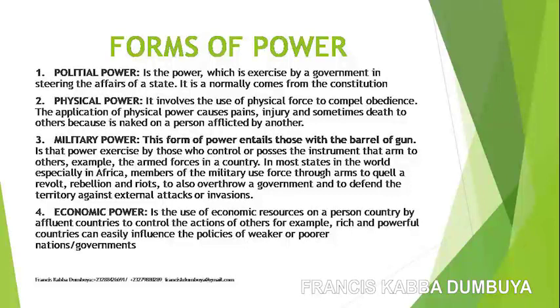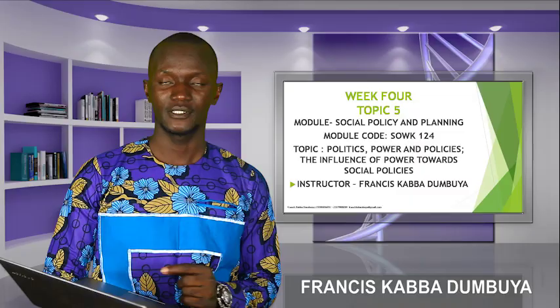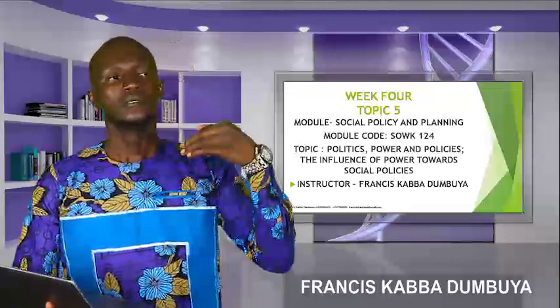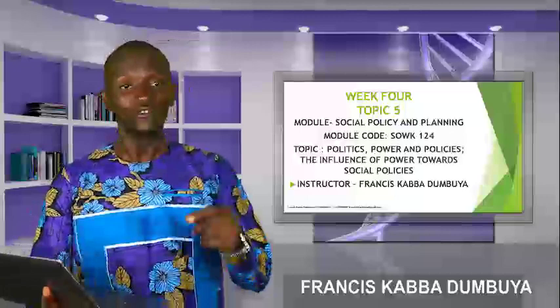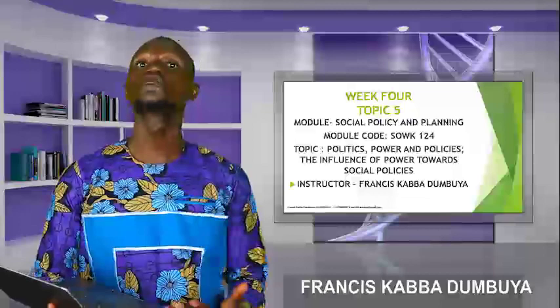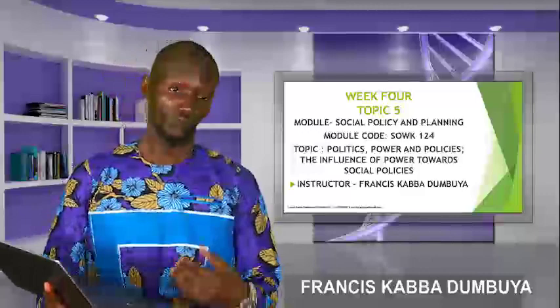Then there is economic power — the use of economic resources by a person or country to control the actions of others. Rich and powerful countries can easily influence the policies of weak or poor nations. Economic power can be exercised when an individual has money and uses those resources to influence others. We obey people sometimes because they are rich and can provide for us, so they can easily influence us to do what they want.